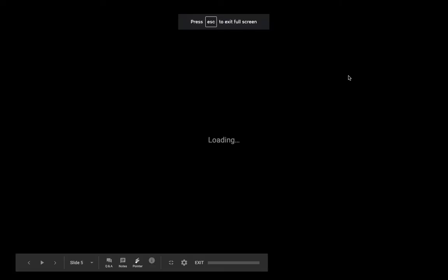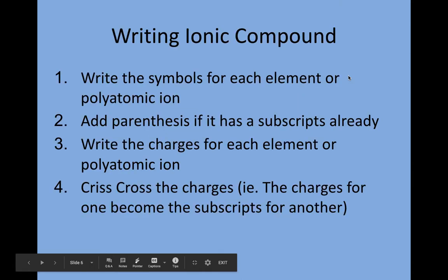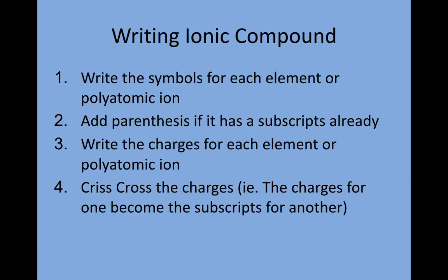In this unit we are talking about writing ionic compounds. The first thing you always want to do is write the symbol for each element or the polyatomic ion. The second thing is to add parentheses if it already has a subscript — remember subscripts are the numbers written at the bottom. Third, write the charges for each element or polyatomic ion. Fourth, crisscross the charges: the charge for one element becomes the subscript for the other. I'm going to do some examples on the board in just a minute.